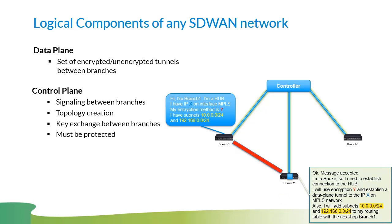So we have a clear separation between how we negotiate the data plane tunnels and the actual data plane tunnels themselves — with different encryption on each. This design is purposeful: we don't need to configure on branch one information about all other branches. We just configure local parameters and the connection to the controller. It doesn't matter whether we add one device or a thousand devices — we won't need to configure anything extra. All the magic, all the information, is exchanged through the control plane via centralized controllers.